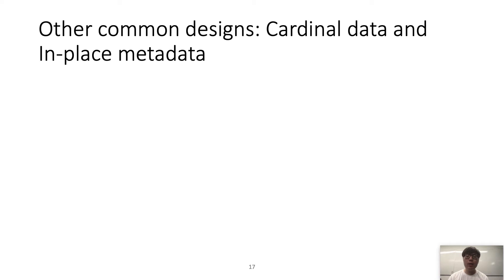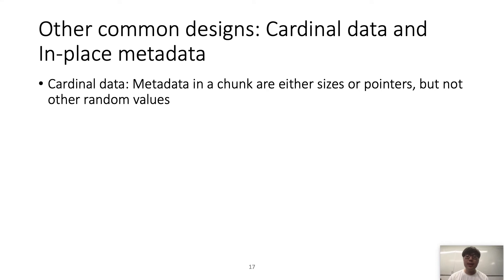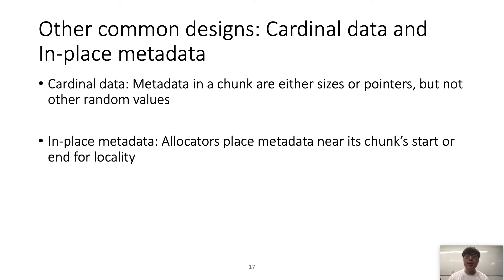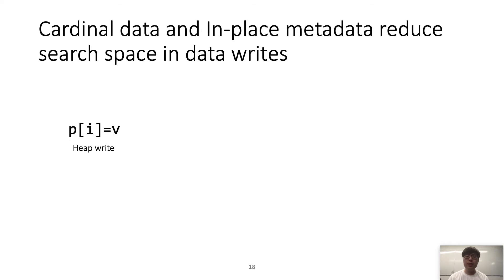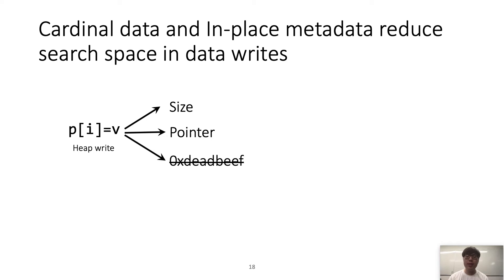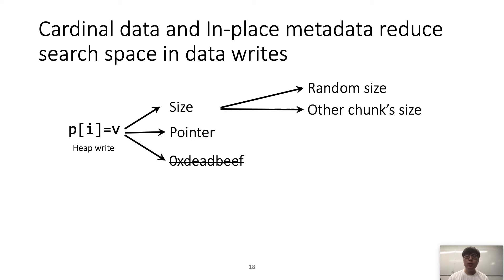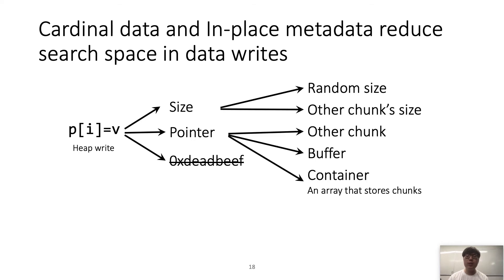We also found that allocators share other common designs: cardinal data and in-place metadata. Cardinal data means the metadata contains only sizes and pointers, not random values, for efficiency. In-place metadata means allocators place metadata near the chunk's start or end for locality, not at random positions. These properties help reduce search space. For example, when generating a heap write, Rkip chooses size or pointer-related values — not random values. For pointer values, it uses other chunks, buffers, or containers. Rkip also limits write locations to the start or end of the chunk instead of random positions.